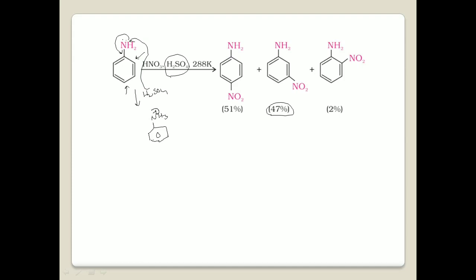So protonation of that NH2 takes place and it becomes NH3+. In this case, NH3+ is a strong electron-withdrawing group (negative inductive effect) and it deactivates the benzene ring. Electron-withdrawing groups are meta-directing groups, so majorly the NO2+ electrophile attacks at the meta position — that's why 47% of meta product is formed.